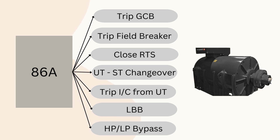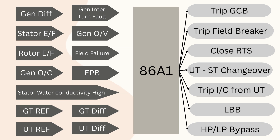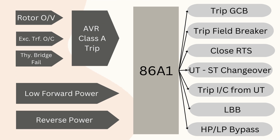In both Class A1 and A2, the trip command goes to all these locations. The 86A1 relay operates in fault conditions where immediate generator isolation is necessary to avoid damage. Similarly, the transformer should be isolated immediately when GT and UT REF and differential protections are operated. Critical protections of excitation systems requiring instant tripping, and conditions like low forward power and reverse power protection, come under Class A1 protection. Reverse power protection operates when the turbine trips, causing the generator to run as a synchronous motor and take power from the grid, damaging the generator and turbine.